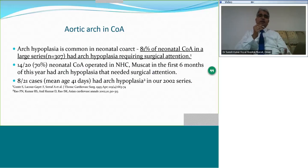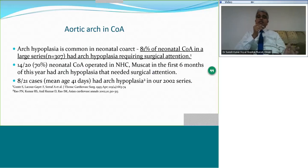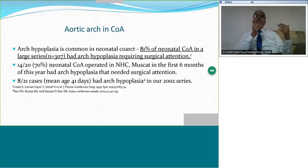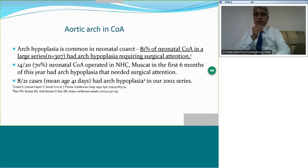In 81% of neonatal coarctations in a large series — the single largest published series by Professor Lacougue from Paris — arch hypoplasia was seen. In our own data at our center, we see about 60 to 70 neonatal coarcts every year. In the first 20, 70% had hypoplasia, while in my own series published in 2002, when the mean age was slightly higher, the prevalence of hypoplasia was only about a third.